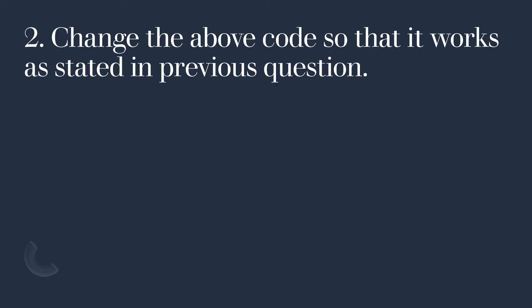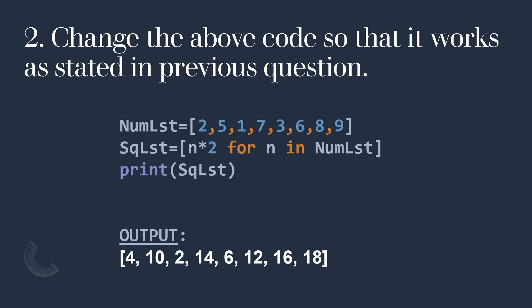Now change the above code so that it works as stated in the previous question. We will change the code like this: numlst is a list, and sqlst will be [n * 2 for n in numlst]. This is a list comprehension. So whatever value is present in numlst, each item will be collected and multiplied by 2 and stored in the new list sqlst. Once we print sqlst, you can see the output storing 4, 10, 14, and so on, which are the doubles of each element of numlst.